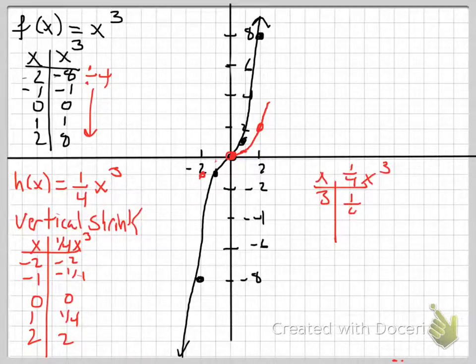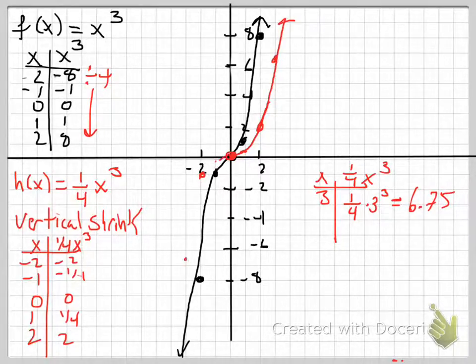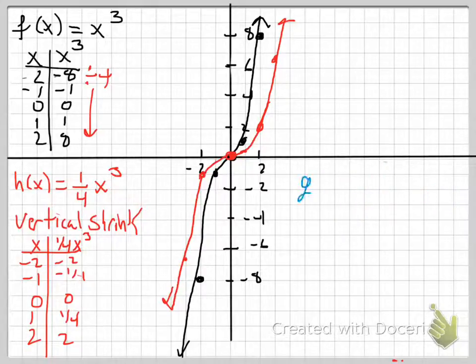I'm also going to put three in because when I cube three, I get 27. But when I divide it by four, I get 6.75, and that's something that's reasonable to graph. And then I'll also have the negative 6.75. So you can see that this thing got... You see that we have squished the black graph down into the red. So that's a vertical shrink or vertical compression, as it's sometimes called.